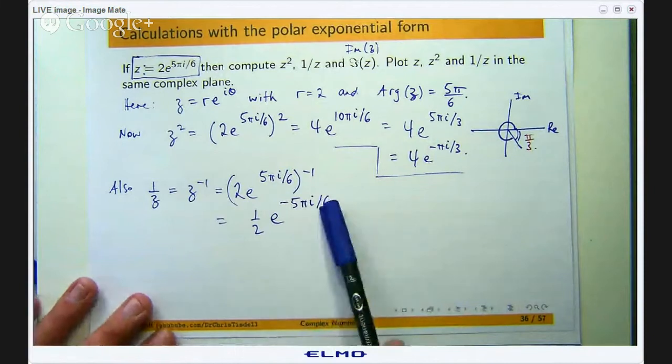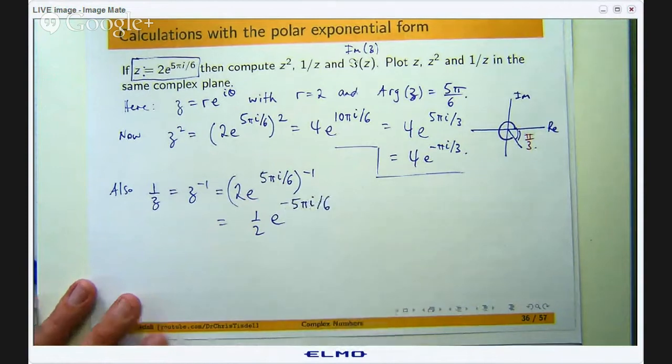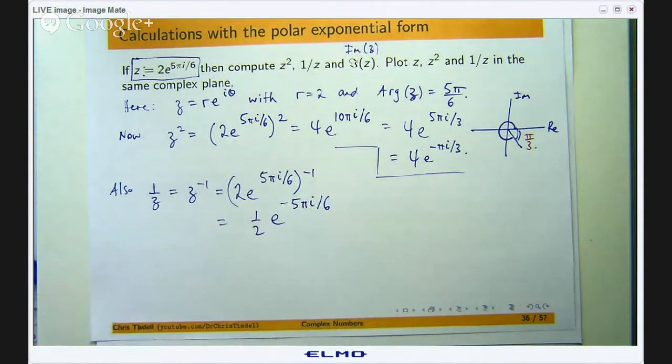Okay so for this one the argument is going to be the principal argument because -5π/6 is between -π and π.